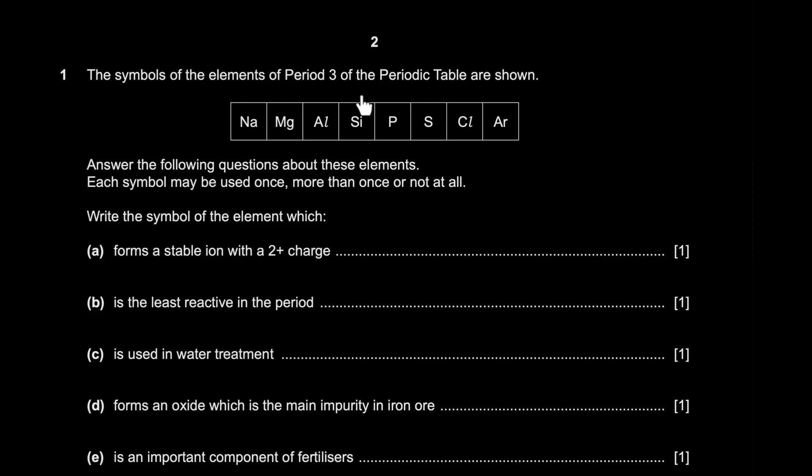The symbols of the elements of period 3 of the periodic table are shown. They have sodium group 1 all the way up to argon. Write the symbol for the element which forms a stable ion with a 2 plus charge. That's easy. That has to be magnesium.